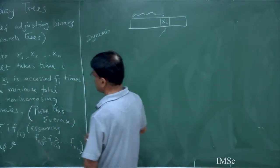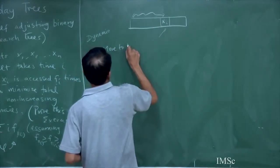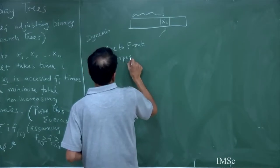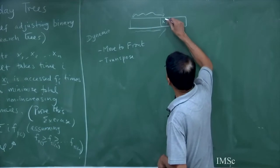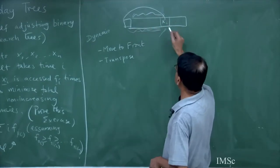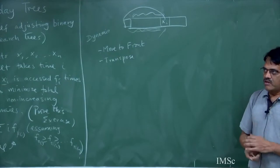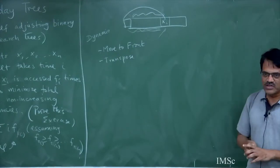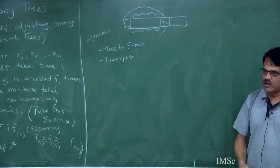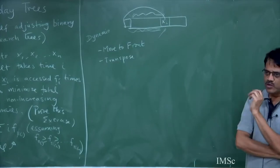There have been various heuristics tried. The first few are: move to front and transpose. Move to front says: after I have accessed xi, just bring xi to the front of the list. The time is proportional to the time it takes to access xi, so you have just doubled the cost. It does not help in the worst case because an adversary can ask to access the last element in the array all the time.